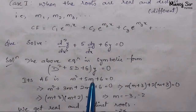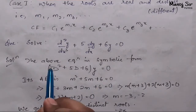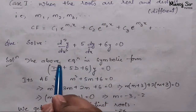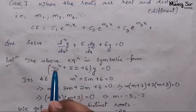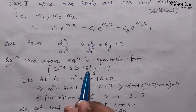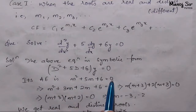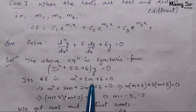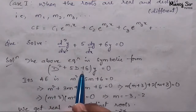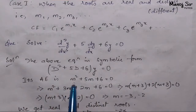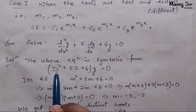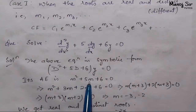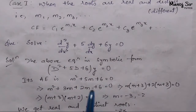So the auxiliary equation is m² + 5m + 6 = 0. Basically, we equate the coefficient of y to zero — that is D² + 5D + 6 = 0 — and replace D with m, giving the auxiliary equation m² + 5m + 6 = 0.